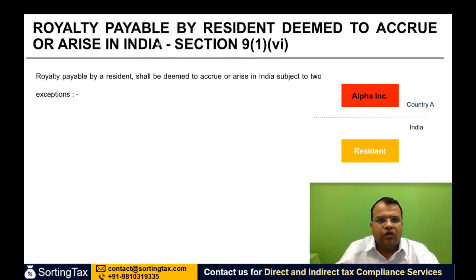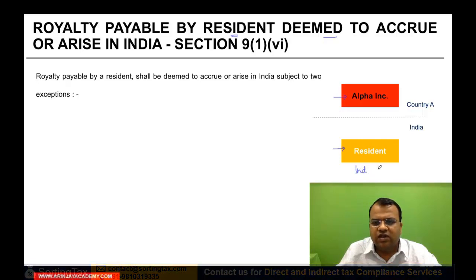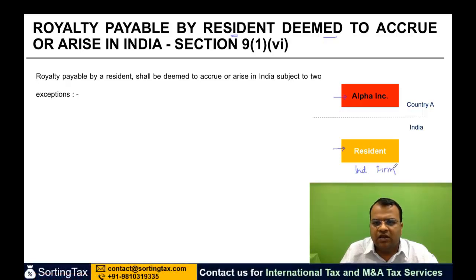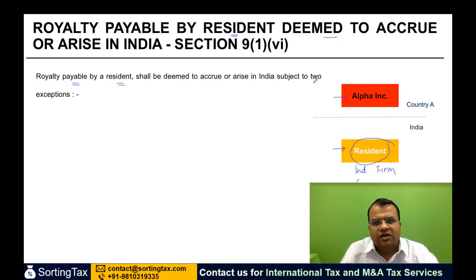Second: royalty payable by a resident deemed to accrue or arise in India. If an Indian tax resident is paying royalty to a non-resident — this resident could be anyone: an individual, a firm, a company, it doesn't matter — as long as it is a resident paying royalty to a non-resident, generally the royalty payable by the resident shall be deemed to accrue or arise in India. But there are two exceptions.